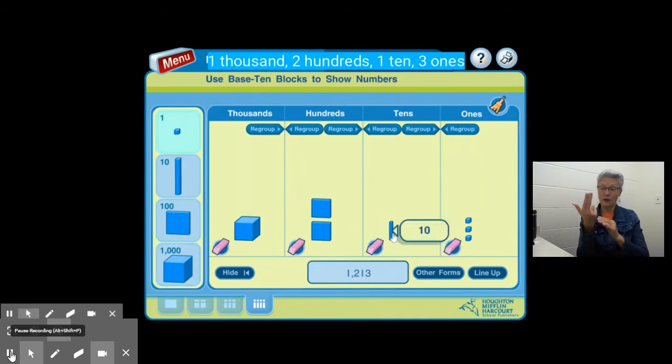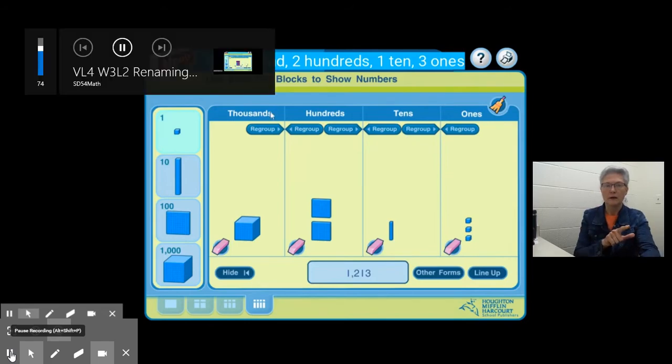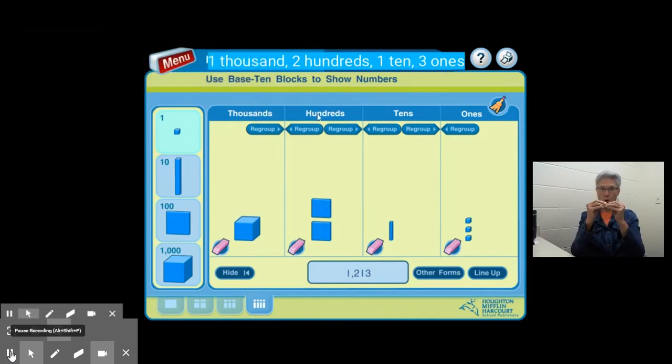We have 13 because we have 10 plus 3 more for 13. Now remember yesterday we talked about how each time we move to the left, our place value is getting 10 times larger. So thousands are 10 times larger than hundreds. Hundreds are 10 times larger than tens. Tens are 10 times larger than ones.